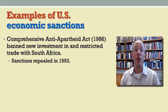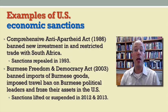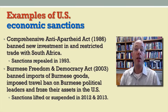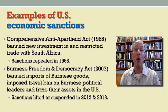Another example concerns Burma, also known as Myanmar. In 2003, the United States adopted a law that banned imports of Burmese goods, imposed travel bans on certain Burmese political leaders, and froze their assets in the United States. Sanctions were lifted or suspended in 2012 and 2013 after the ruling military regime began to loosen its grip on power and to allow a move toward democracy. Those are more broad-based economic sanctions.